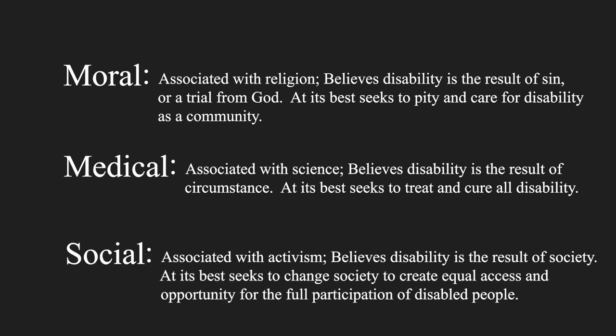The social model of disability frames disability as a problem of society and pushes to change society for the betterment of disabled people. The social model is beginning to gain hold in the U.S. and is traditionally associated with disabled activists. For example, the social model would say that a person needing a wheelchair doesn't make someone disabled unless society is built in such a way that the person is inhibited. Shaping society where a person in a wheelchair can easily access every location eliminates the disabling factors. The moral model at its best seeks to pity and care for the disabled person as a community; the medical model seeks to treat and cure all disability; and the social model seeks to change society to create equal access for the full participation of disabled people.